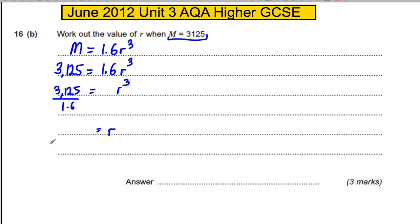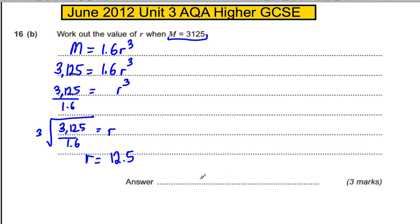And therefore R — whatever this is — R must be the cube root of 3125 over 1.6, and we can just tap that into our calculator in one move. We can type in the cube root of the fraction 3125 over 1.6. Straight away our calculator gives us the answer as 12.5. So therefore R equals 12.5 — again, three unbelievably straightforward marks.